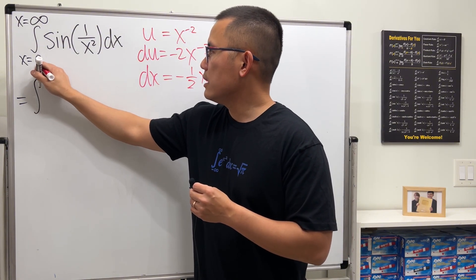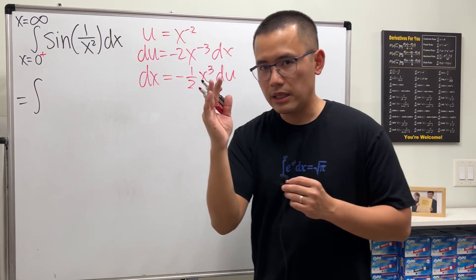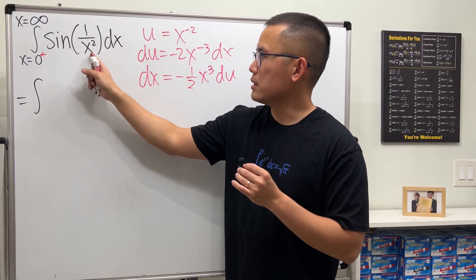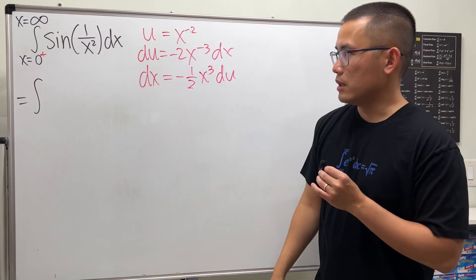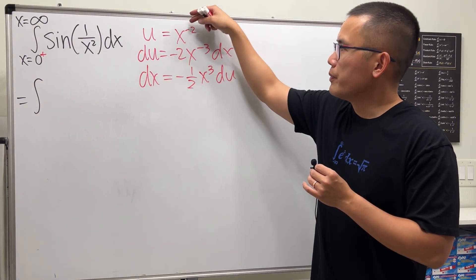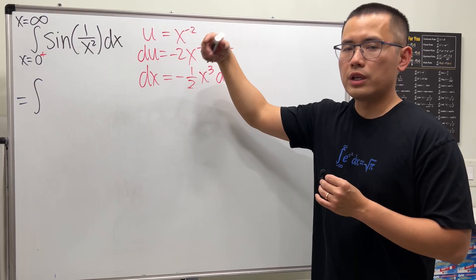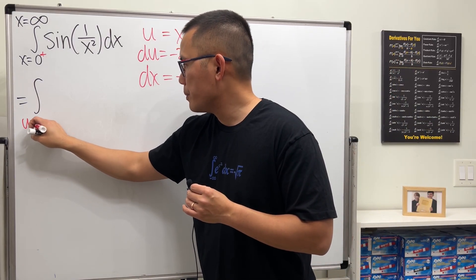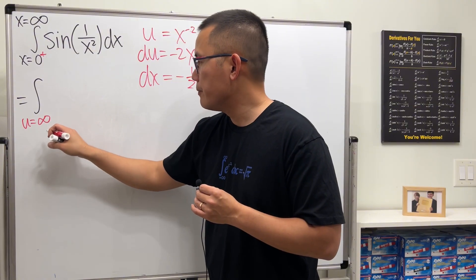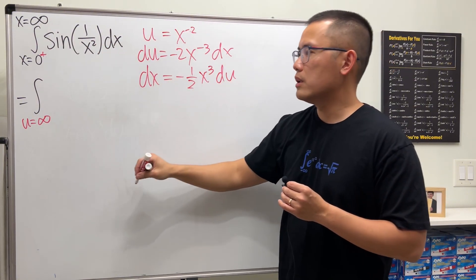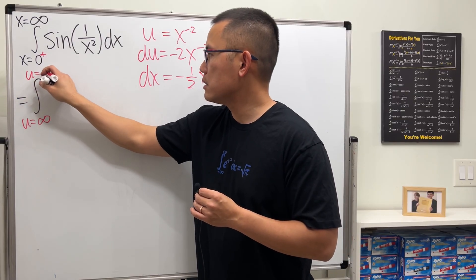For the first one, this is technically 0 plus, because it will go from 0 to infinity. And 0 is a trouble number because of the x squared in the denominator. If we put 0 plus into 1 over x squared, we get positive infinity. So u will be positive infinity here. And if x is infinity, 1 over infinity squared will give us 0.